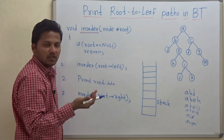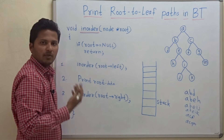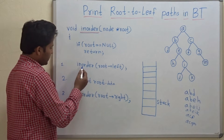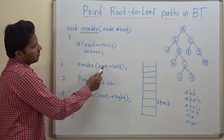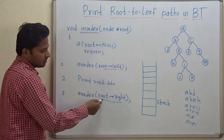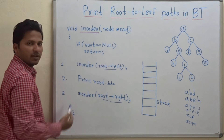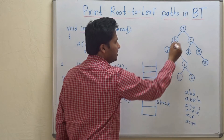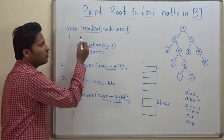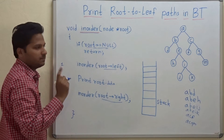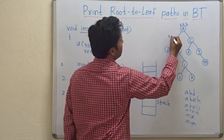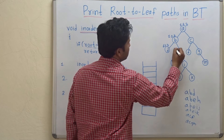In my previous videos I have already explained in-order traversal — I will mention the link in the description — but again I will quickly revise. These are the three steps for in-order traversal: first step is to look at the left subtree, then print the root, and the third step is to look at the right subtree. At each node we perform these three steps, and whenever we encounter null we return. Remember this is a recursive function.